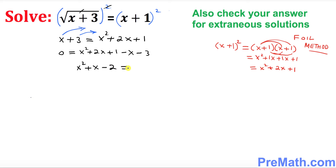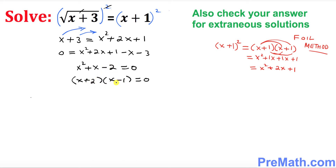Once you simplify, that becomes x² plus x minus 2 equals 0. Now we're going to solve for x. We can see this can be easily factored. We can write x plus 2 and x minus 1, because positive 2 times negative 1 gives the last number, and positive 2 plus negative 1 gives positive 1 — the middle coefficient.